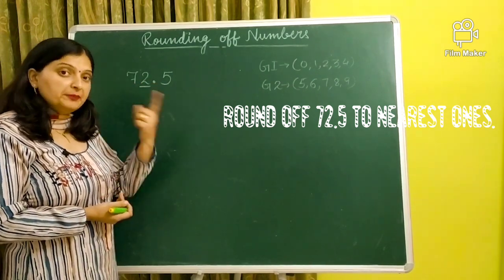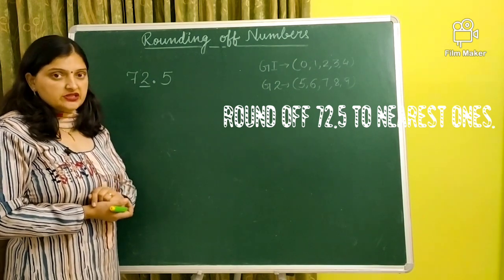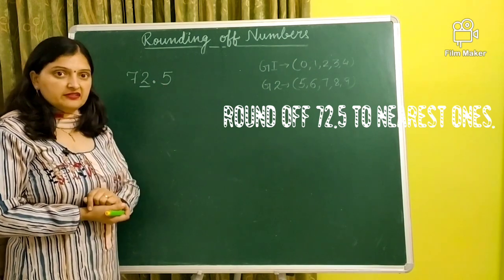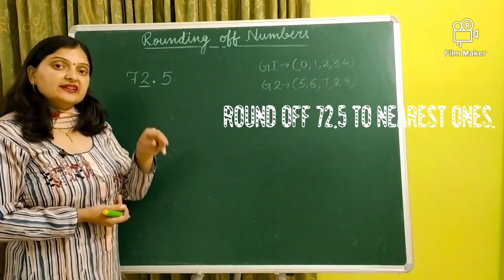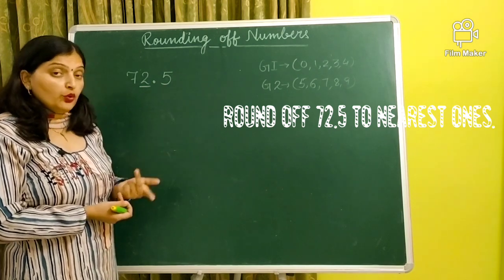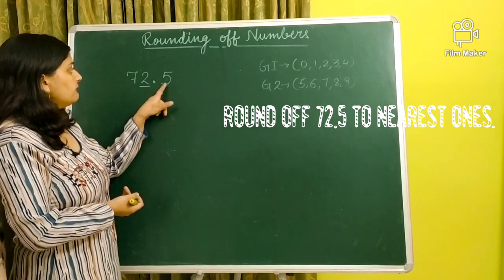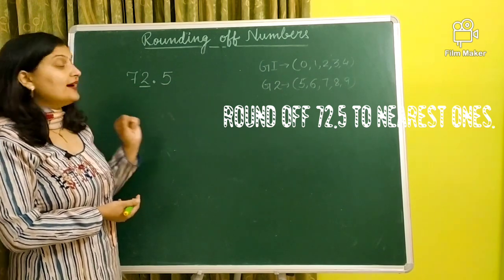Now, the next step, compare the next digit which is immediately right to the underlined digit. And the number is five. Find your place, two. Look at the right face. Right face is five. Five or more, add one more. It's five. It means we have to add one to the underlined digit.